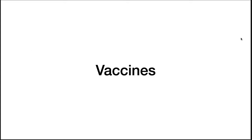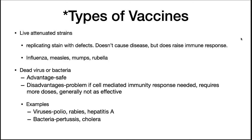Our final topic in public health is the use of vaccines to prevent disease. There are three classes of vaccines. One is live attenuated strains — a replicating strain that has defects so it can't cause significant disease or causes no disease at all, but still raises an immune response. Examples include the influenza virus in some cases, measles, mumps, and rubella.